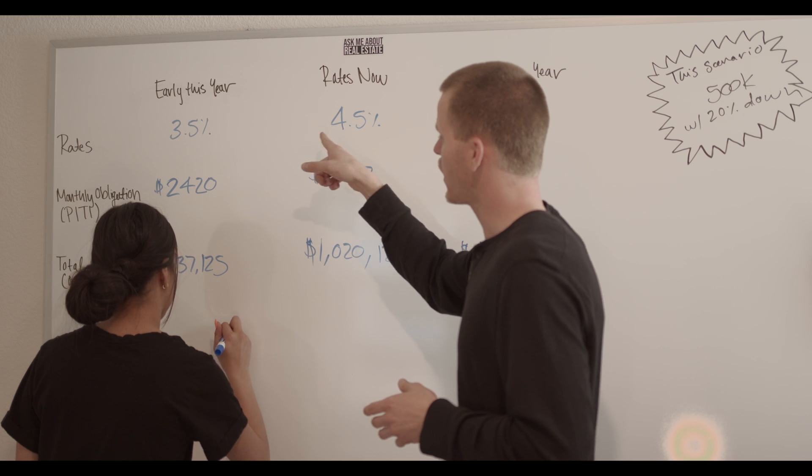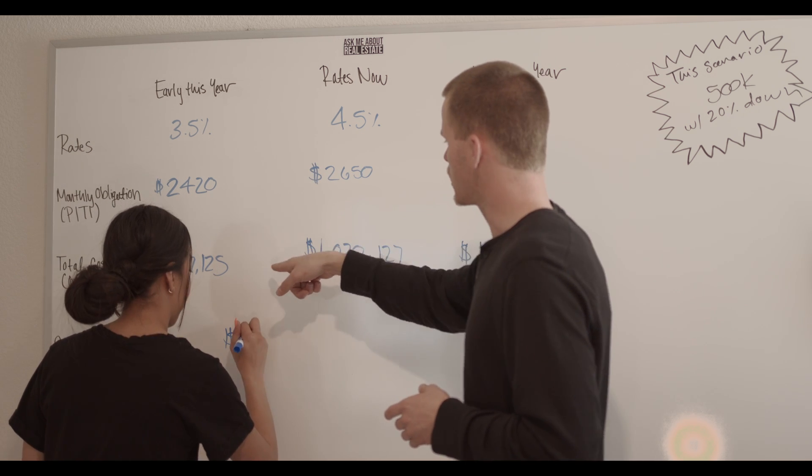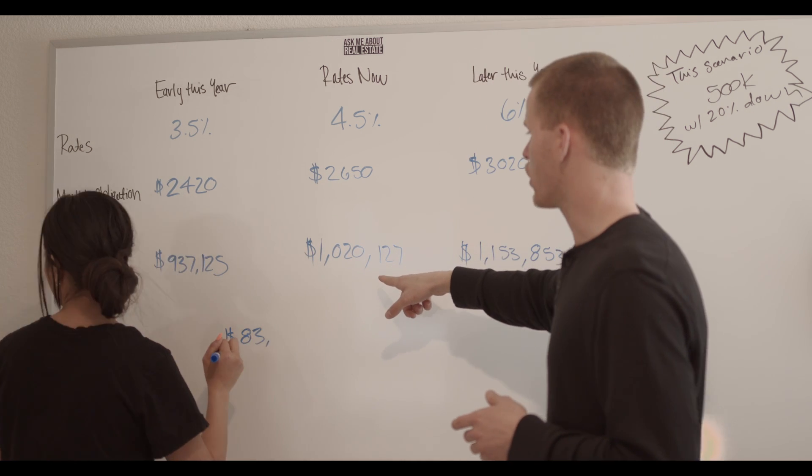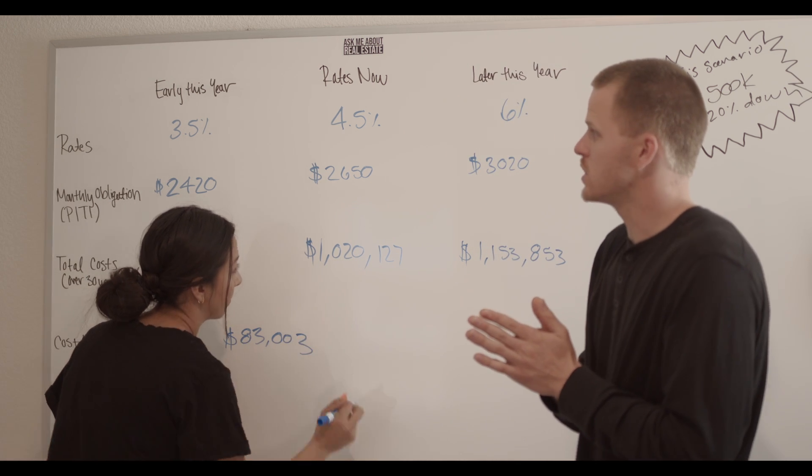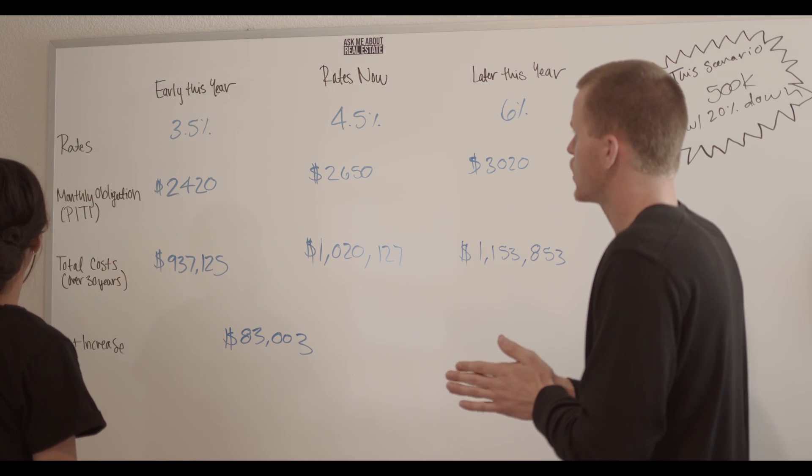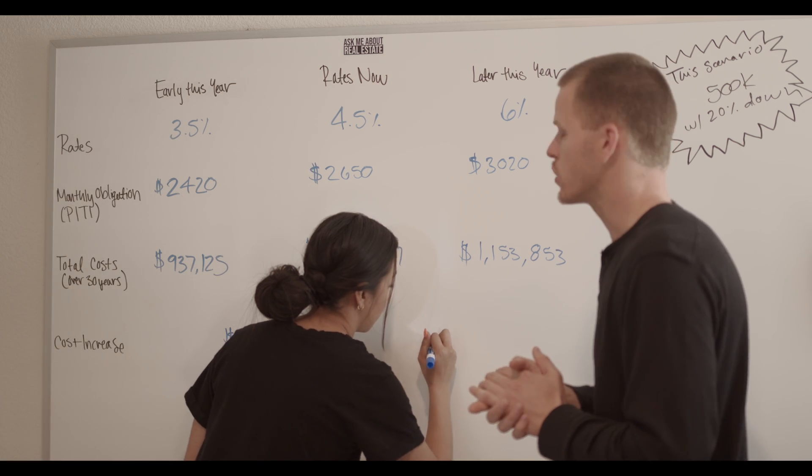Even from 3.5% to 4.5%, you're looking at about $100,000 more already. Just from increasing from a 3.5% mortgage rate to a 4.5% mortgage rate.